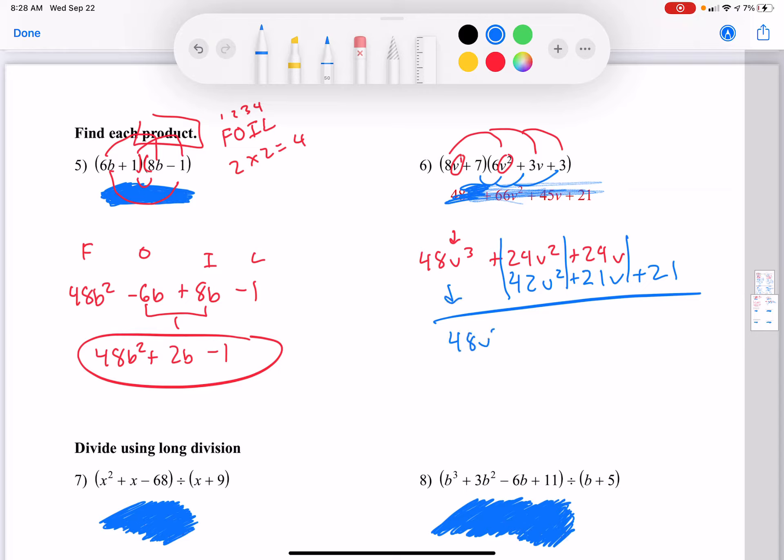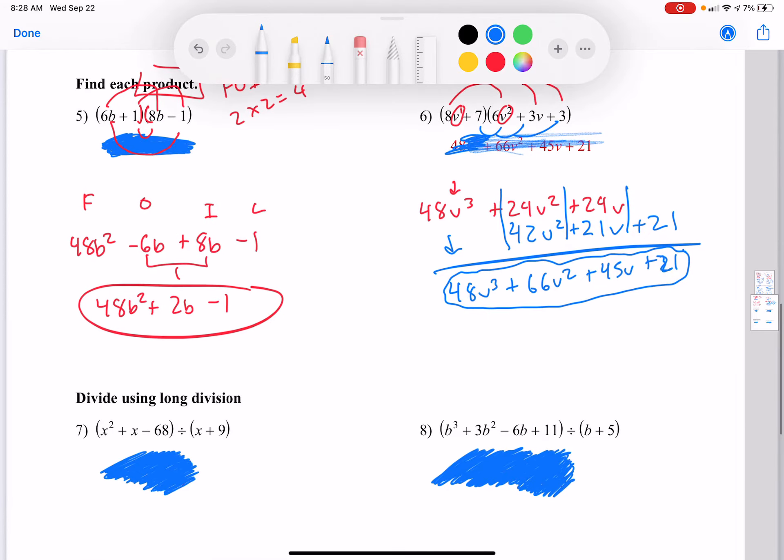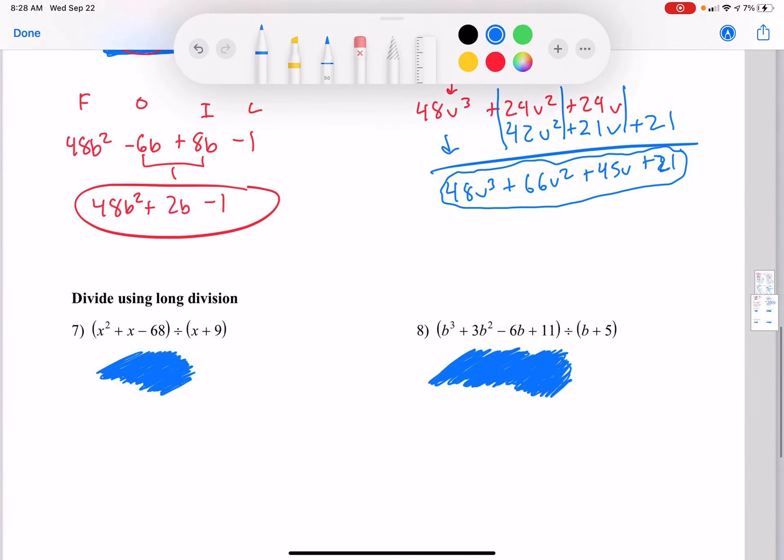48v cubed, 24 plus 42 is 66v squared, 24 plus 21 is 45v, plus 21. Obviously you can already see the answer, but what's more important here is how to do it, not exactly what your answer is. So let's move on to the next one.